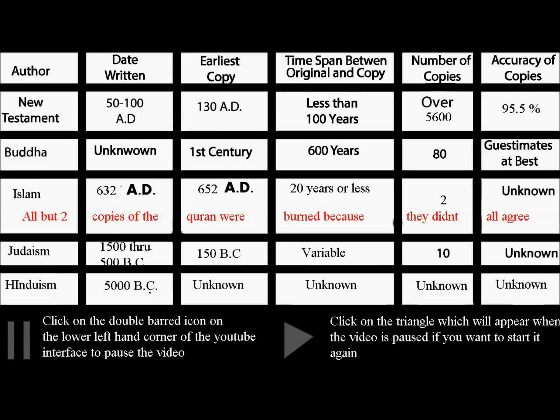I'm going to explain this chart on comparative religion. We're going to compare the New Testament to Buddhism's works, the Koran of Islam, Judaism — the Old Testament that is — and Hinduism.